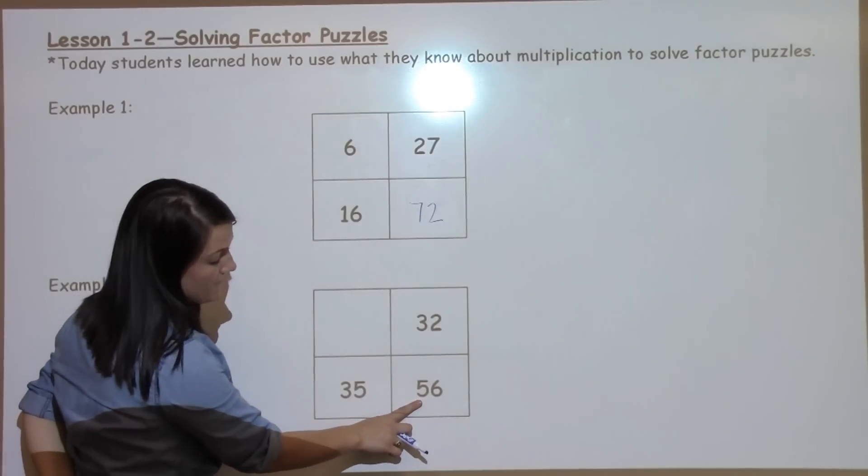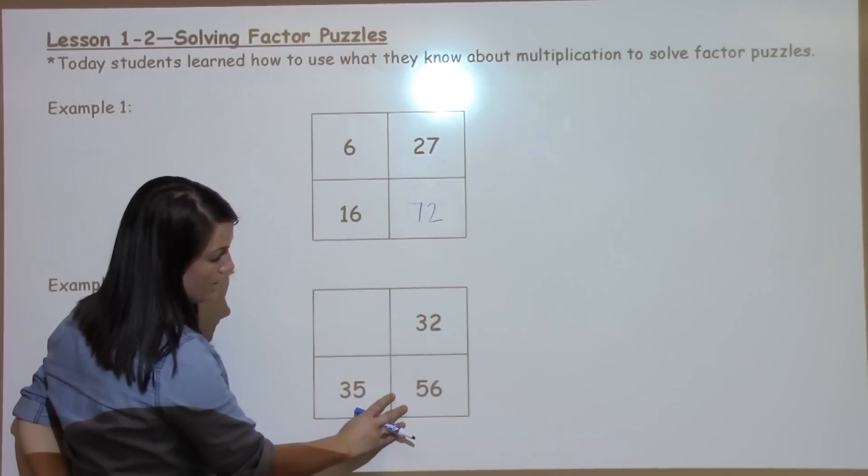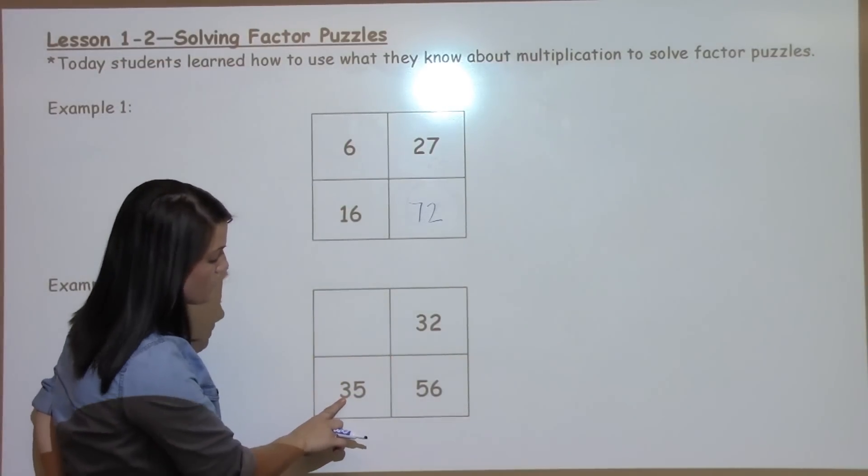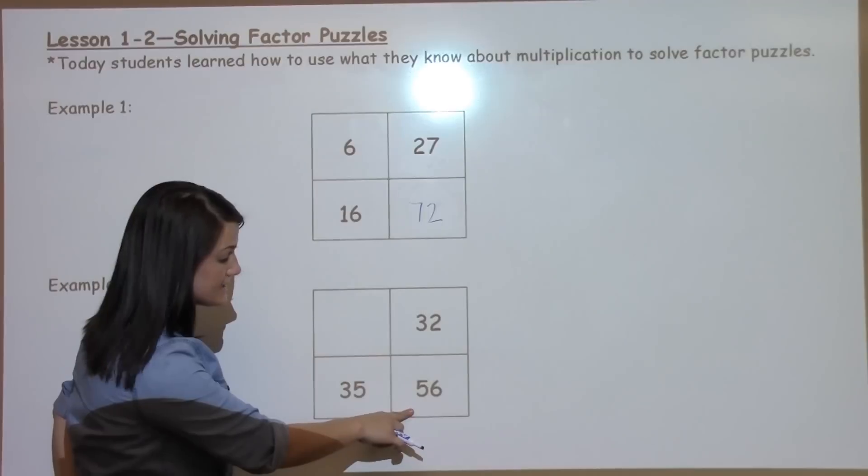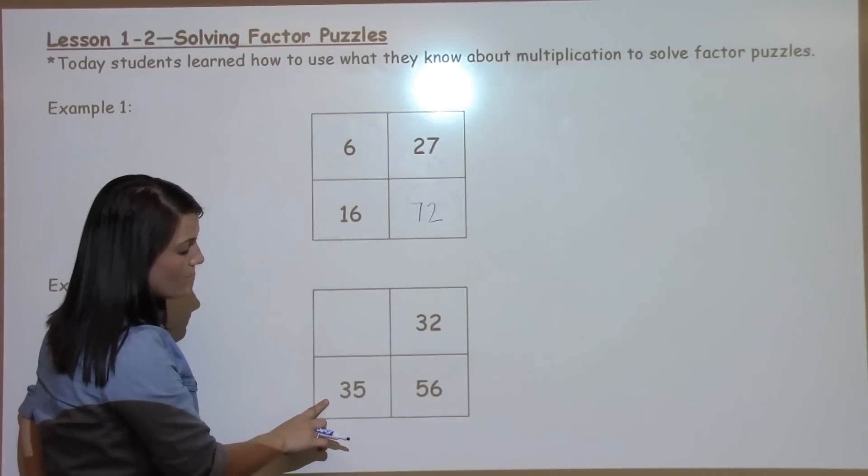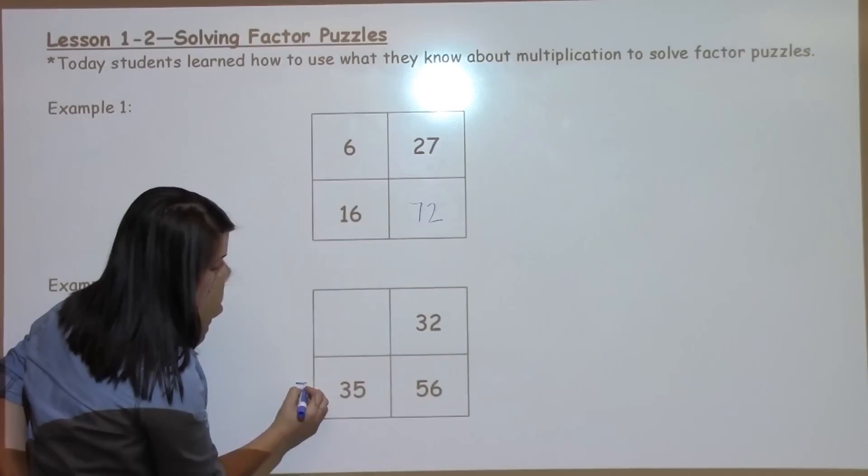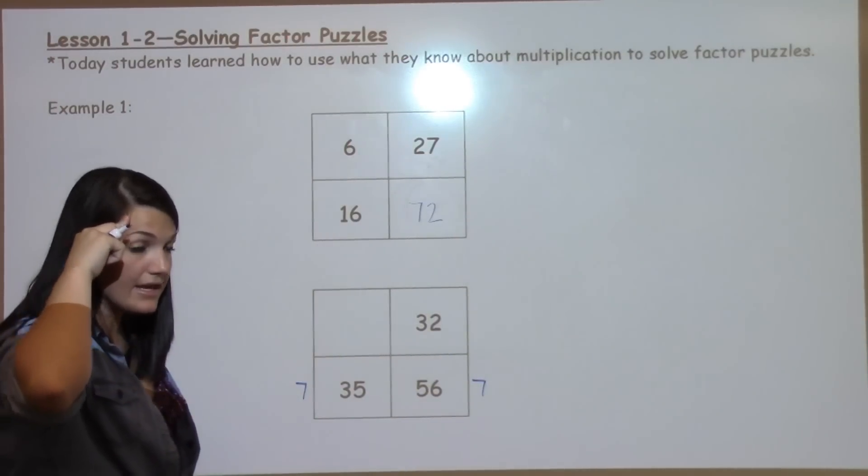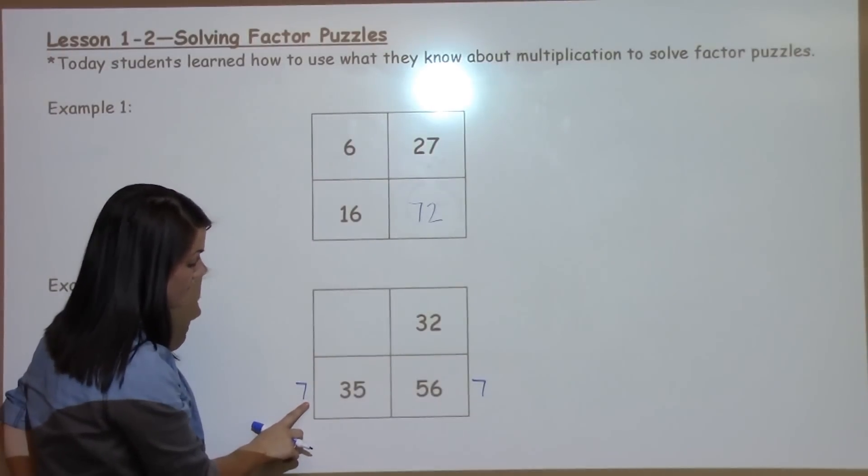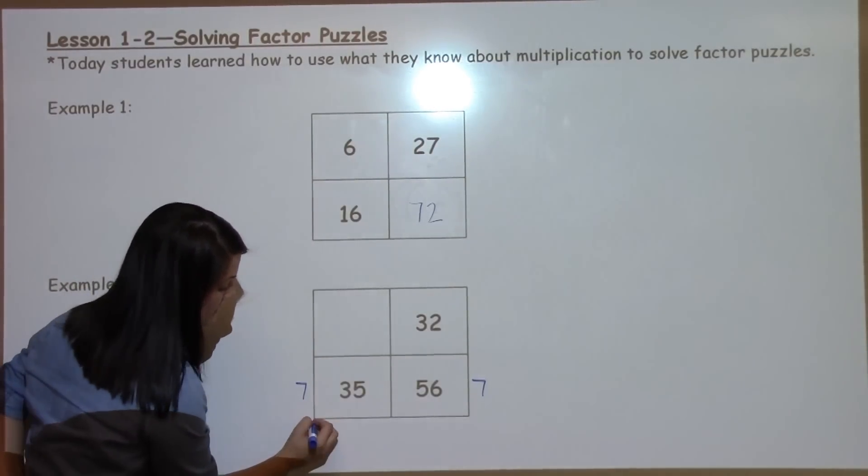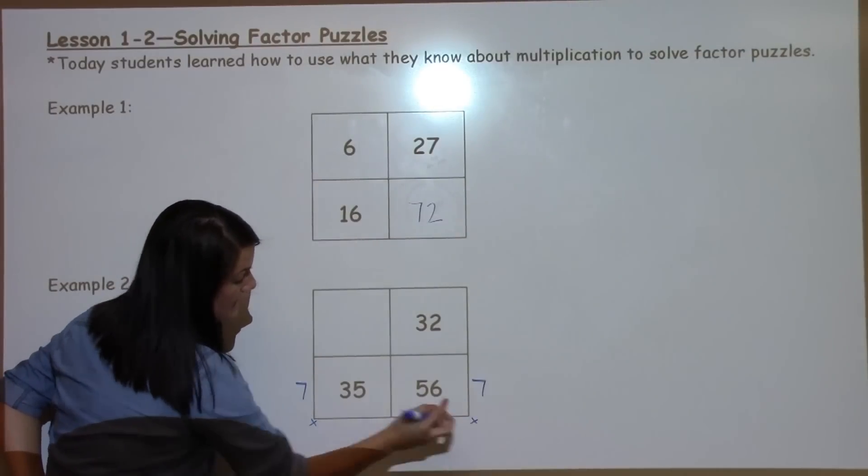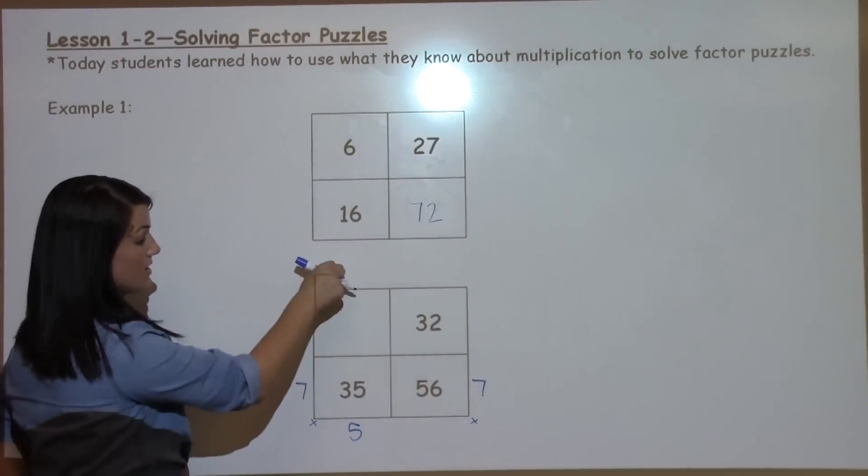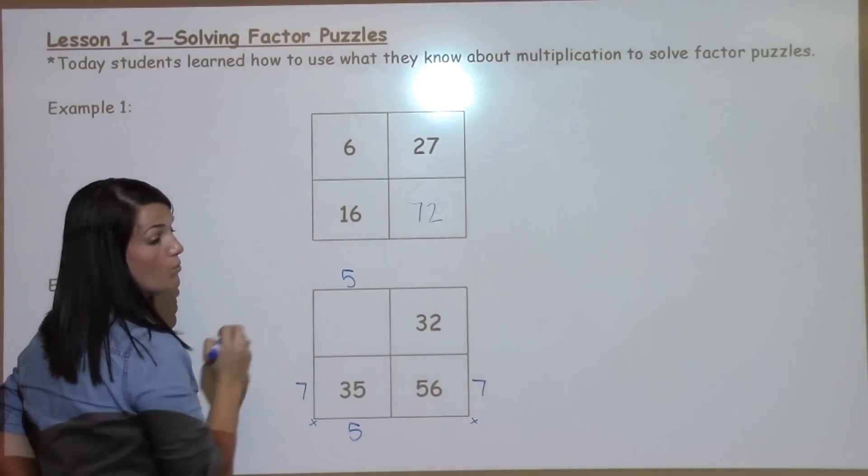So we've got 35 and 56 that we could start with, or 32 and 56 that we could work with. I'm going to choose to work with 35 and 56 because I know right away that they have a 7 in common. I can think of multiplication facts in my head that these two have that I can multiply by 7. So 7 times what gives me 35? 7 times 5. That 5 can shoot straight up top. We'll use it later on.